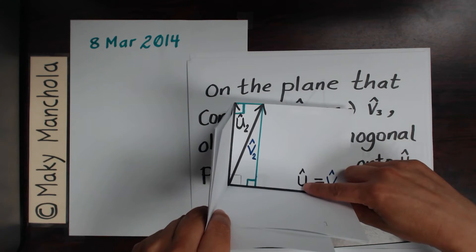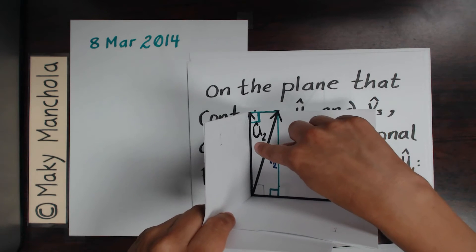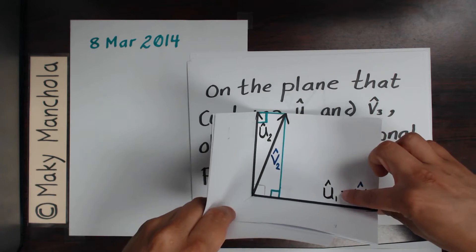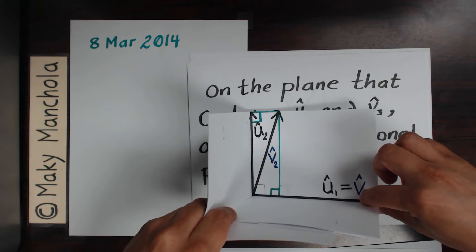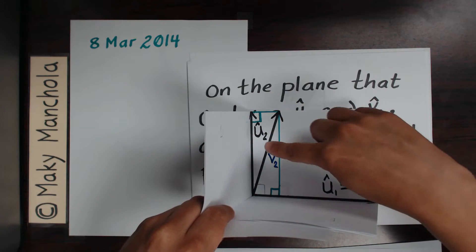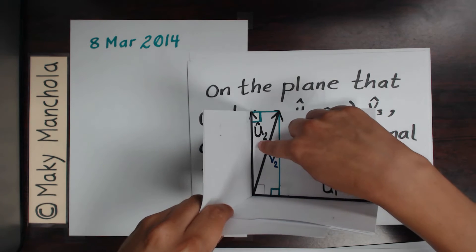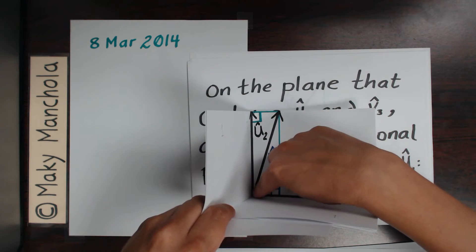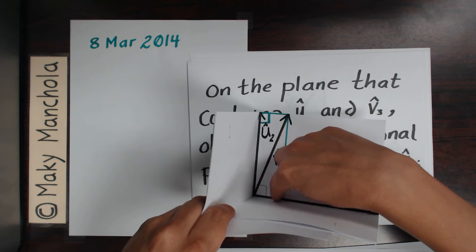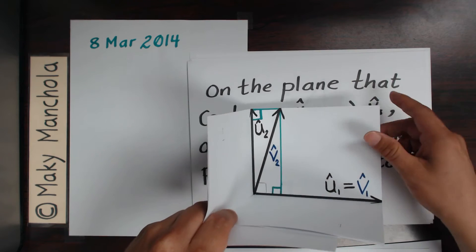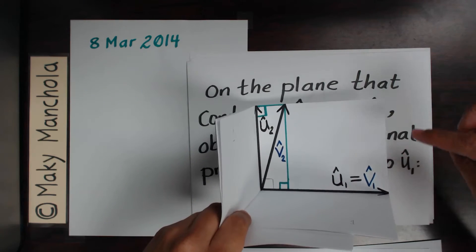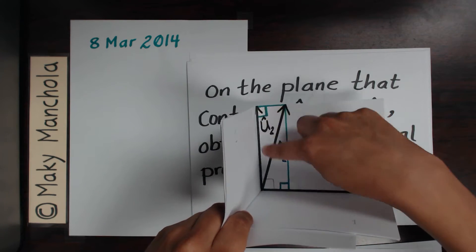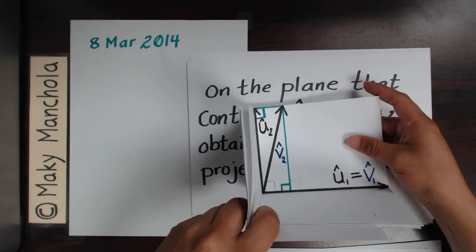Here we have u1 and u2. We defined u1 to be v1, and we just defined u2 to be the difference between v2 and the projection of v2 onto u1. Let's observe that u1 and u2 happen to be perpendicular.